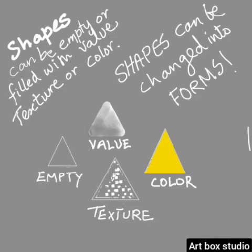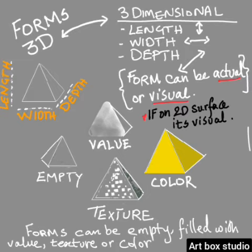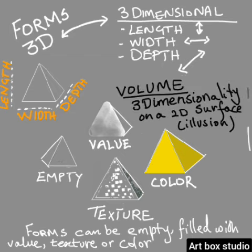Shapes can be empty, or they can have values, colors, and texture. They can also be changed into forms by adding the third dimension, which is depth. Forms are 3D — with length, width, and depth — and you can create the illusion of 3D on a 2D surface.